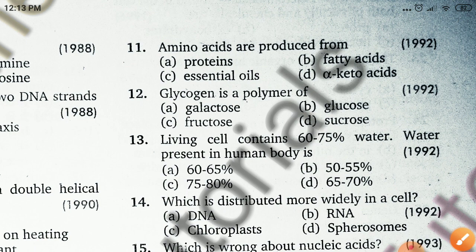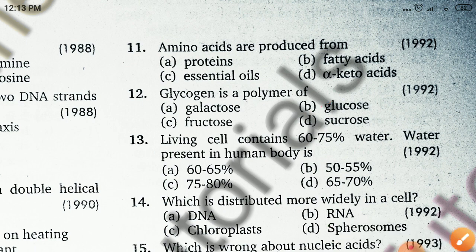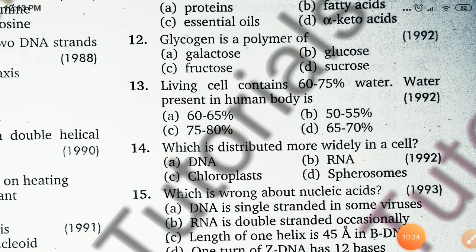The 12th question: glycogen is a polymer of — galactose, fructose, glucose, or sucrose. The right answer is glucose. Glycogen is a polymer of glucose, as discussed in the previous video.